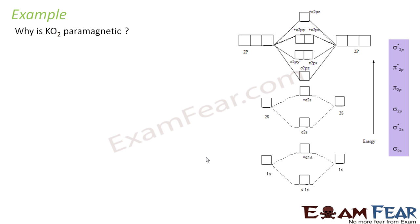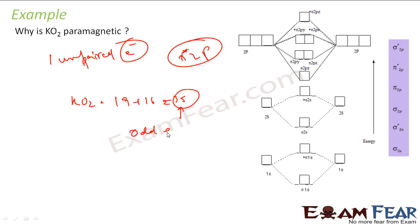The next question is why is KO2 paramagnetic? This is because it has one unpaired electron in 2 star P. If you use molecular orbital theory and fill this, you will find that it has one extra electron. KO2 has potassium plus O2, that is 35 is the atomic number. If you see it has odd electrons, so it has to be paramagnetic.